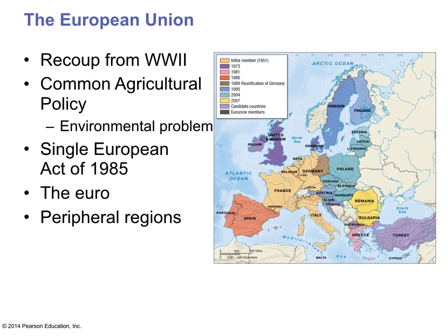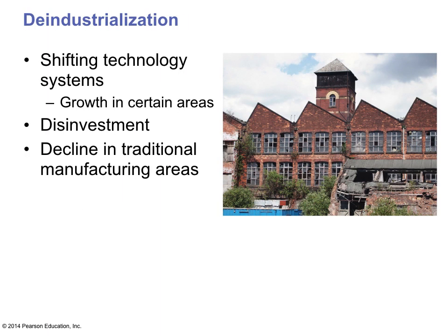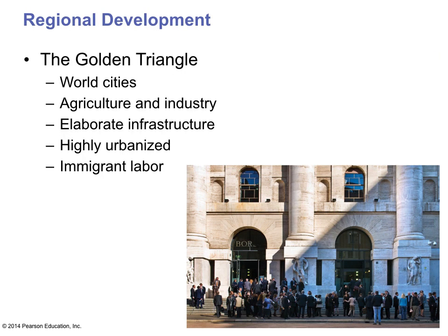One way Europe is trying to compete globally is through the creation of the European Union, which is still a big debate today. Europeans are trying to create a common economic monetary system such as the Euro, which is being accepted by some countries and disliked by others. There's growing technology interest in Europe as they move away from hard industries. There is disinvestment in some parts and a decline in traditional manufacturing, while other parts are finding new agricultural and industrial development. People are becoming highly urbanized, moving away from farms into cities.